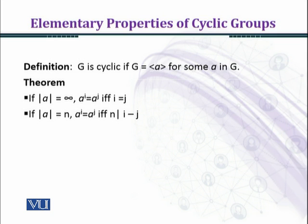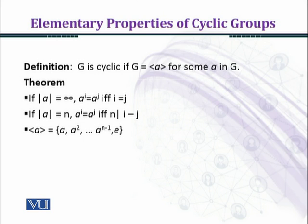The second condition is: if the order of a is finite, then a^i equals a^j if and only if n divides i minus j. The group generated by a contains elements a, a^2, and so on up to a^(n-1) and e. Because the order of a equals n, we have a^n equal to e, giving us a total of n elements.